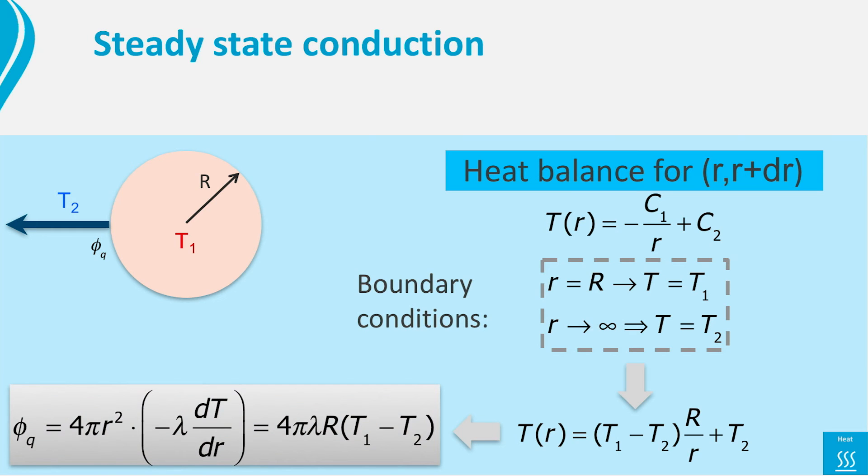From this we can compute the heat flowing using Fourier's law. Phi_q equals 4πλR times the driving temperature difference.